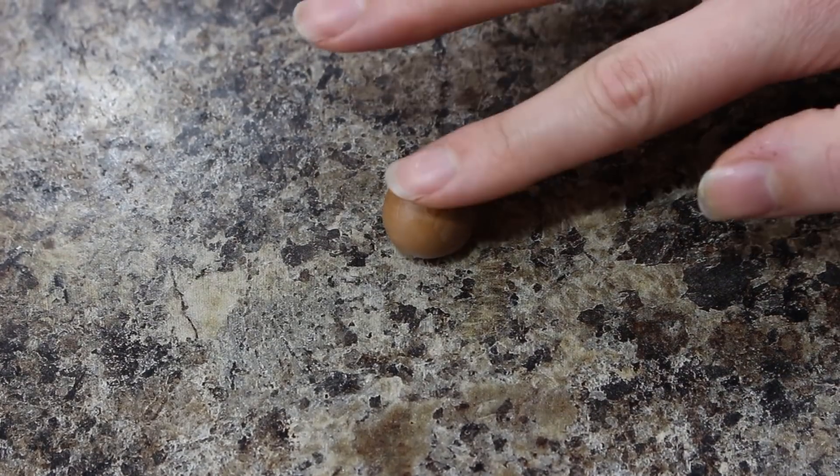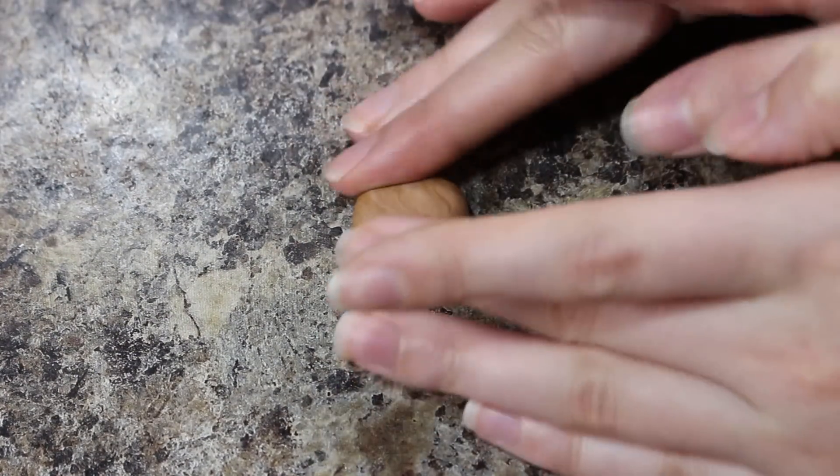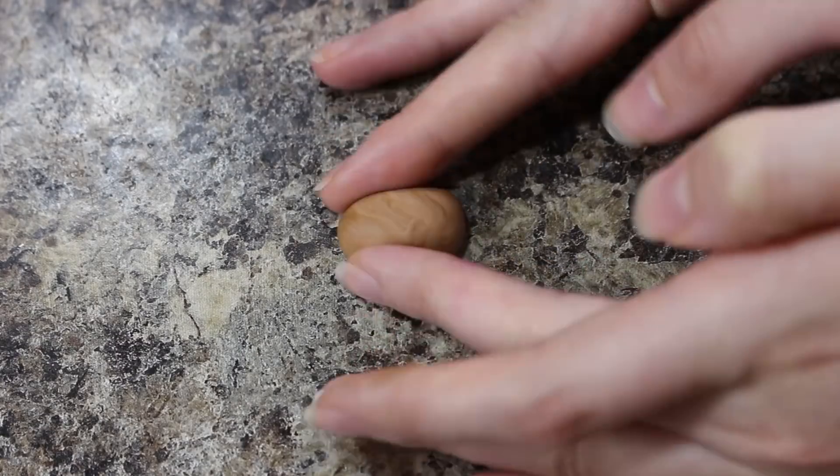For my bread, I took a lighter brown fondant and then just rolled it into this oval shape and scored the top using my fondant tool.